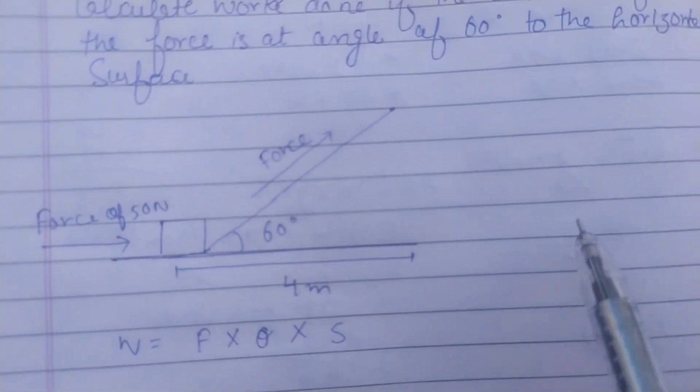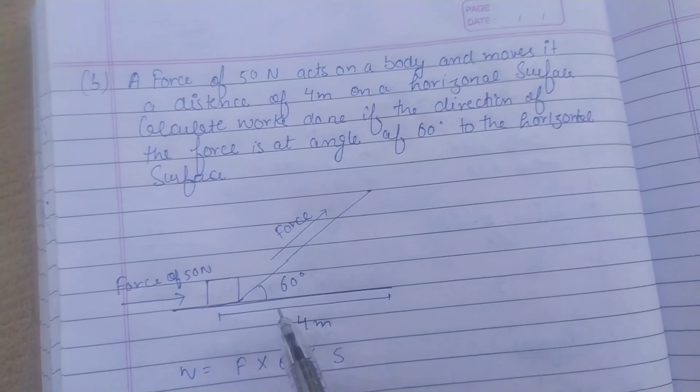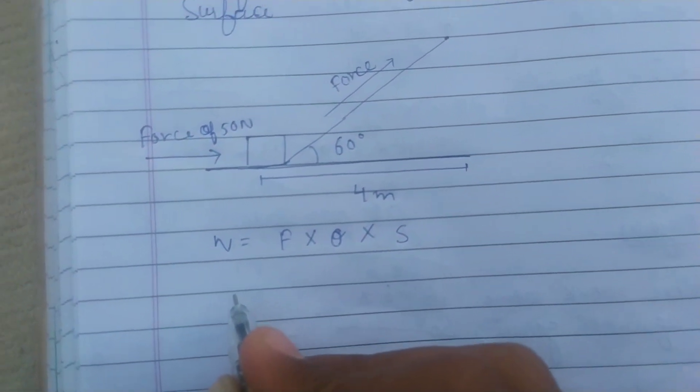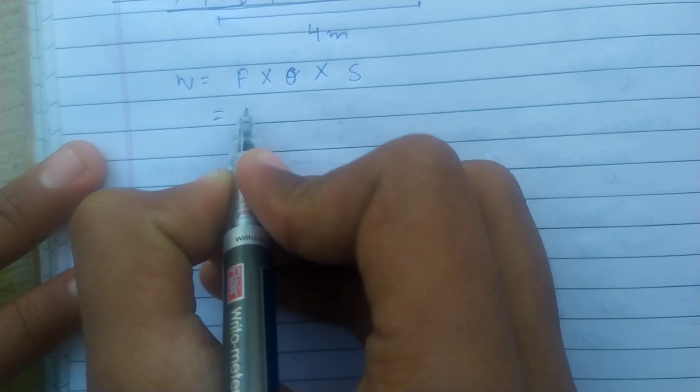Here's a diagram showing the direction of the force at an angle of 60 degrees. We use the formula: work done equals F into theta into S, where S means displacement or distance.